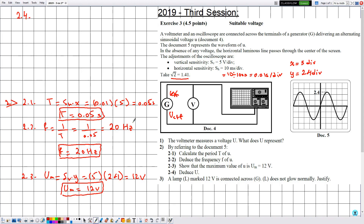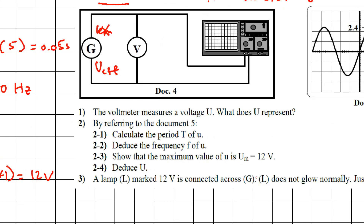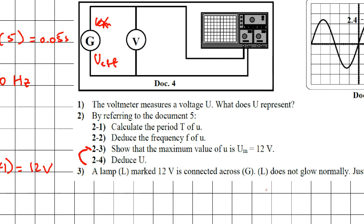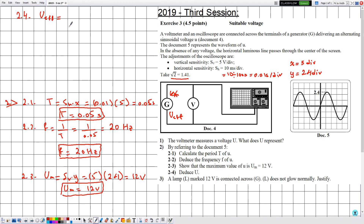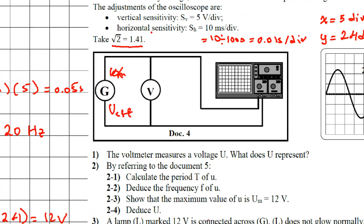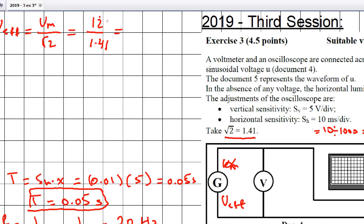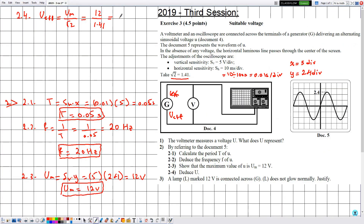In part 2.4, deduce U — the effective voltage. We already established that U represents the effective voltage. Using the result from 2.3, the effective voltage and maximum voltage are related by U_effective equals Um divided by square root of 2. With Um equal to 12 and square root of 2 equal to 1.41, this gives 8.51 volts. The effective voltage is 8.51 volts.